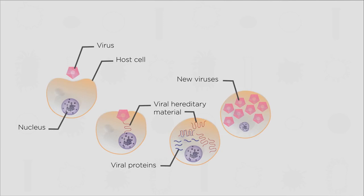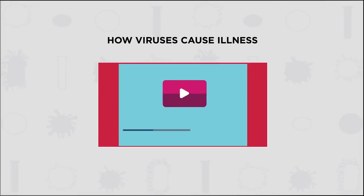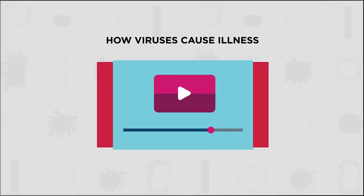After lots of virus particles have been made, the host cell dies and the viral particles are released to infect more cells. The released viral particles can also spread to other people. There are actually two different ways in which a virus attacks the host cell, which we'll look at in more detail in this video.